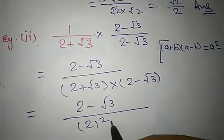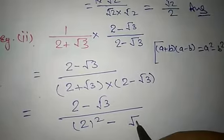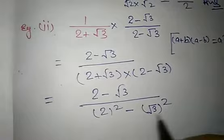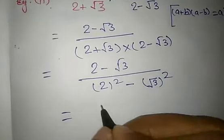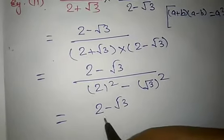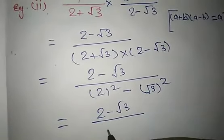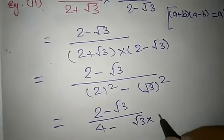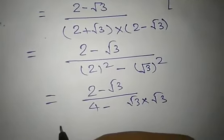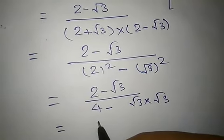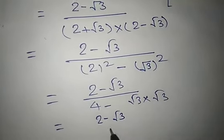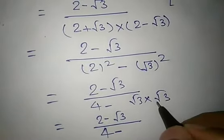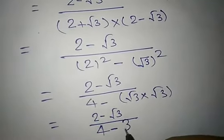We get 2 squared minus root 3 squared. This equals 2 minus root 3 in the numerator over 4 minus 3 in the denominator. Root 3 squared means root 3 multiplied by itself, which equals 3.